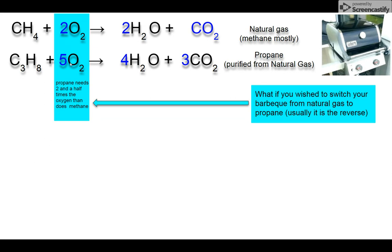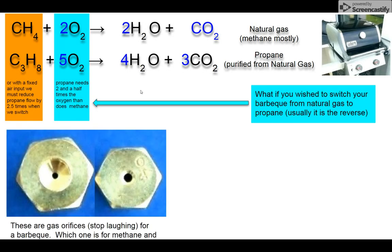Now, in a Bunsen burner, that's easy. You just unscrew the chimney till the windows letting in the air are two and a half times bigger. But I guarantee you, the barbecue, your home furnace, and your hot water tank do not have adjustable air intakes. The only thing you can adjust is the fuel. So if you can't increase the air by two and a half times, then you need to cut down the fuel by two and a half times. And this is how they do it. These are changeable air orifices for furnaces and barbecues to change them from one fuel to another.